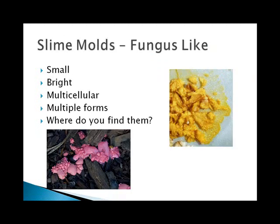Slime molds are the last group of protists, and they are fungus-like. They're typically a very small group, but they tend to be very brightly colored. They change form during their life cycle, going from a fruiting form to the migrating slug stage, and they literally move across surfaces. You often find them in damp locations, just as you would find most fungi. So let's move on to that kingdom.